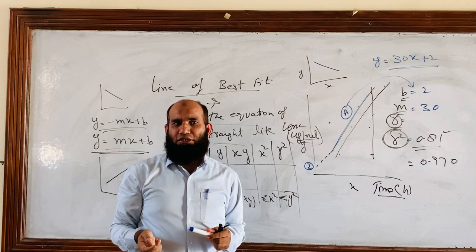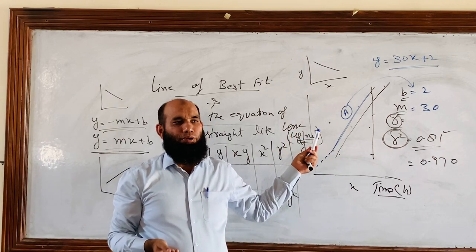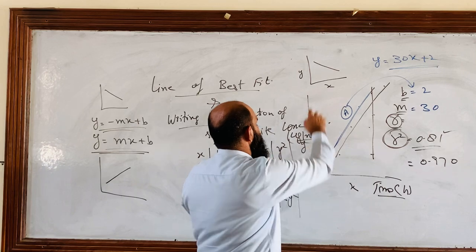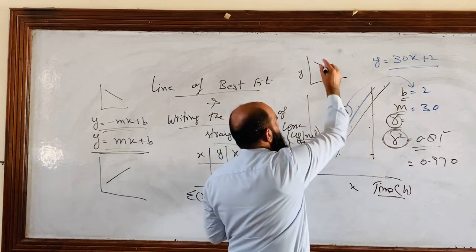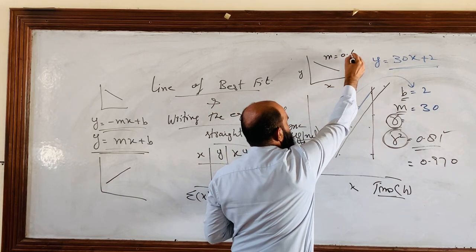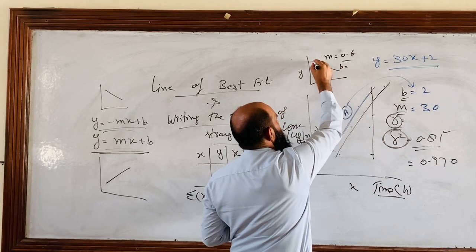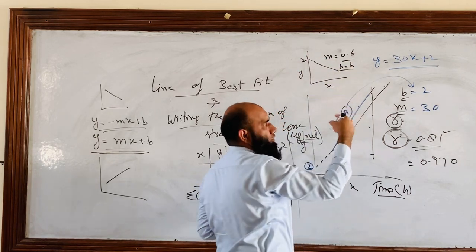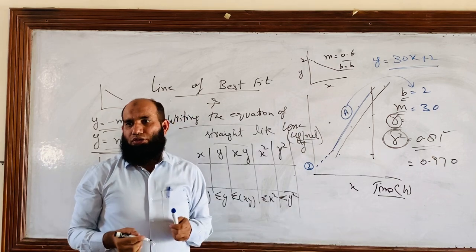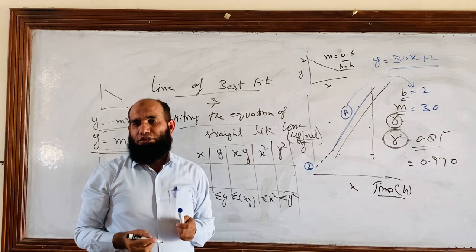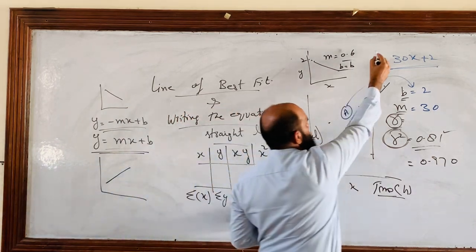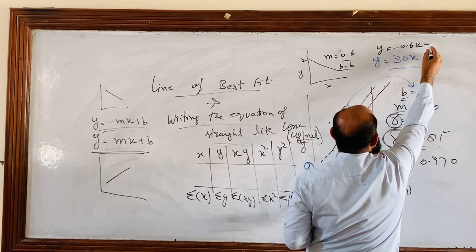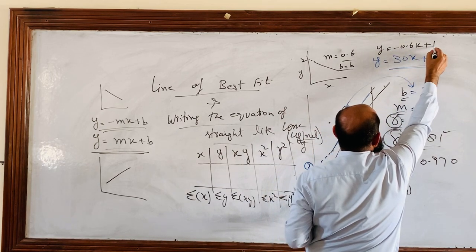If I have the graphical representation and the slope value is now negative 0.6 and b is the same, 2, then the equation will be changed. We will have to write y is equal to minus 0.6x plus 2.